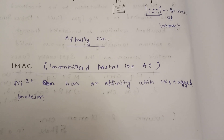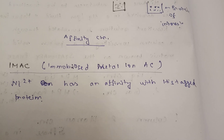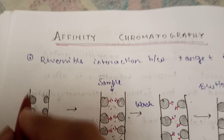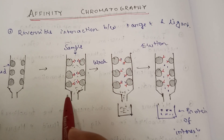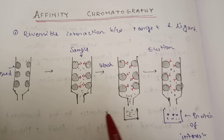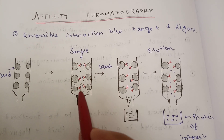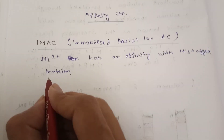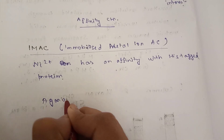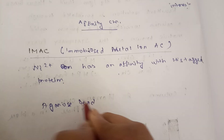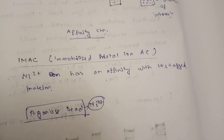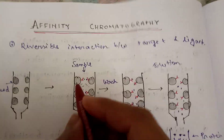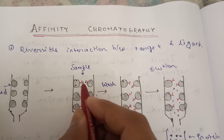If nickel has an affinity with His-tag proteins, then you can use nickel with your bead — let's say agarose bead. Here, antibody was used as the ligand with the bead in the antibody-antigen interaction example. In IMAC, you use nickel with the agarose bead, and only the histidine-tagged proteins will bind to it.